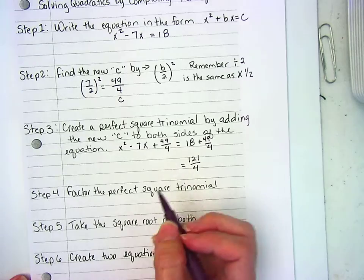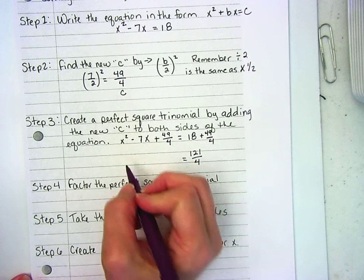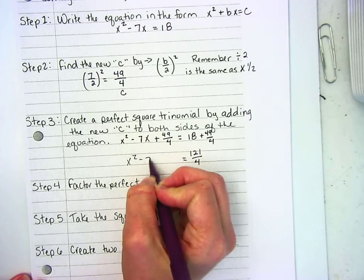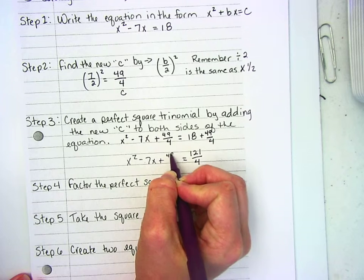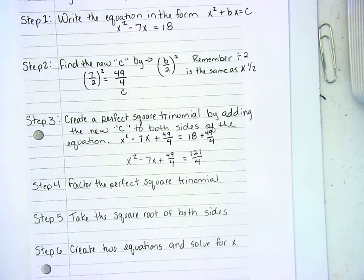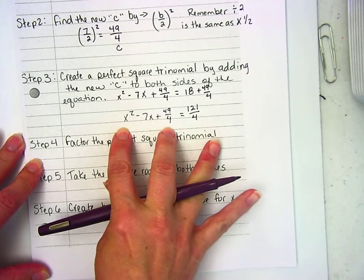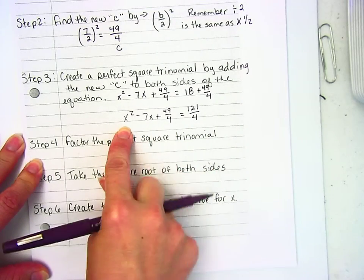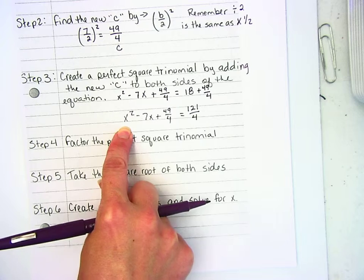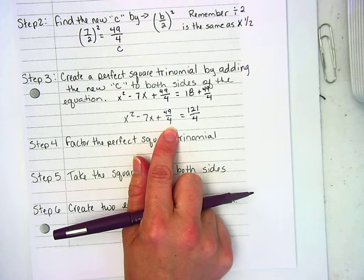And now I'm going to rewrite everything else. I have x² - 7x + 49/4. Step 4 says to factor the perfect square trinomial. Factor it means break it apart. What do I use to get x²? X, X times X. What do I use to get 49/4?